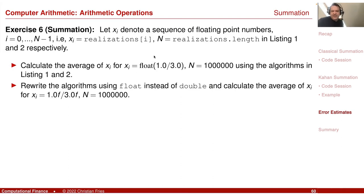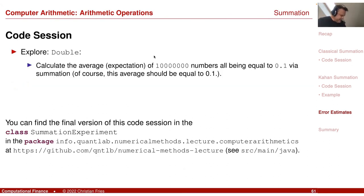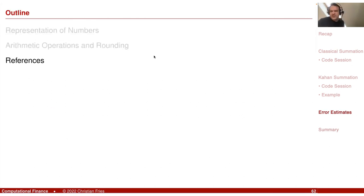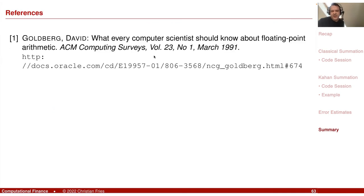That was our exercise — we already implemented this for various values and also compared float versus double. You'll find this code in the repository under the summation experiment in the computer arithmetics package. This concludes our session on computer arithmetics. You may want to look at the referenced article which also contains the proof of the Kahan summation.